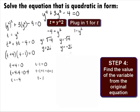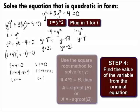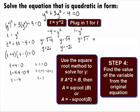Substituting in our other value of 1 for t, we get 1 equals y squared. Again, we use the square root method and get y equals the square root of 1 and y equals the negative square root of 1, which simplifies to y equals 1 and y equals negative 1.